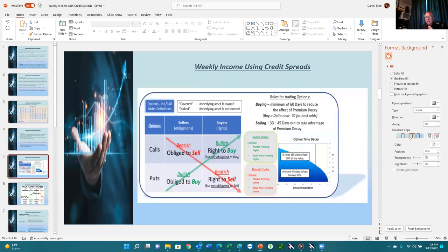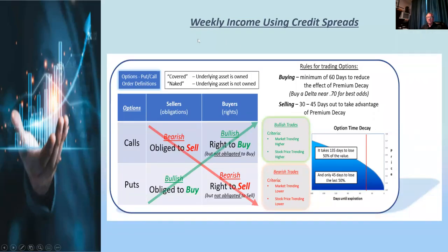Here's an image showing the different ways of using options. You have calls and puts, and you can be either a buyer or a seller. As a buyer of calls, you have the right to buy that stock but you are not obligated to. As a buyer of puts, if the stock goes down you have the right to sell it but you're not obligated to. You can also be a seller of options — you can actually be the market maker of the option.